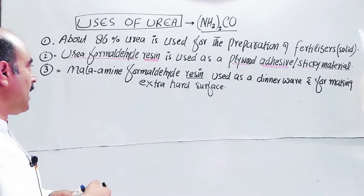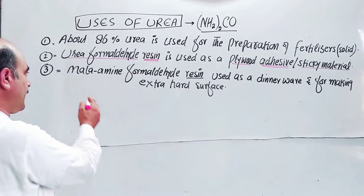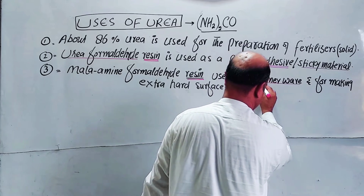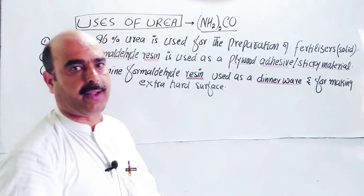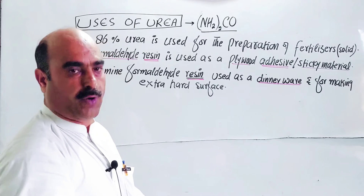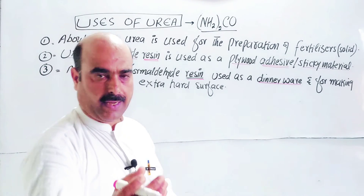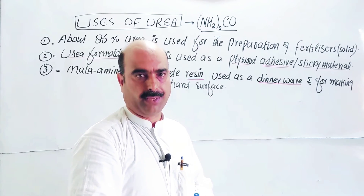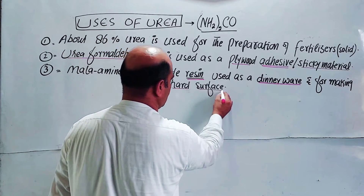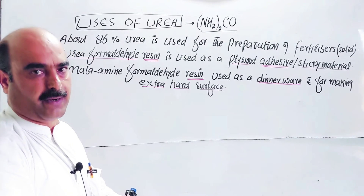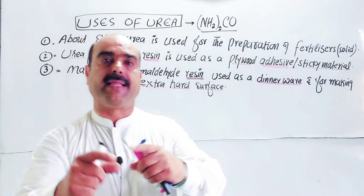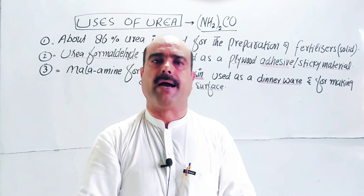So the melamine-formaldehyde resin is used as a sticky material and as dinnerware — plates, cups, and other items for lunch and dinner. It is also used for making hot pots and extra hard plastic-type surfaces due to its hardness. In summary, urea combined with formaldehyde produces resins used as adhesives and in dinnerware.